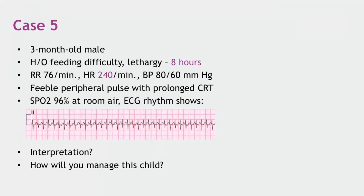An ECG was performed because the heart rate is 240, and a standard ECG rhythm is obtained. The question is what is the interpretation. All answers point to SVT — supraventricular tachycardia. But why is it PSVT and not sinus tachycardia? What are the points against sinus tachycardia?